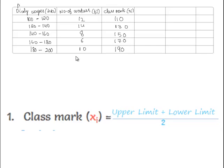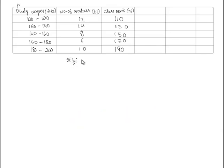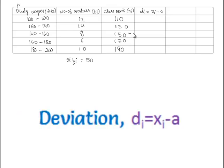Here the total sum we get, sigma fi is equal to 50. And here we find the deviation. di is equal to xi minus A. Here 150 is considered as assumed mean. Hence, we get minus 40, that is 110 minus 150. Here minus 20, 0, 20 and 40.